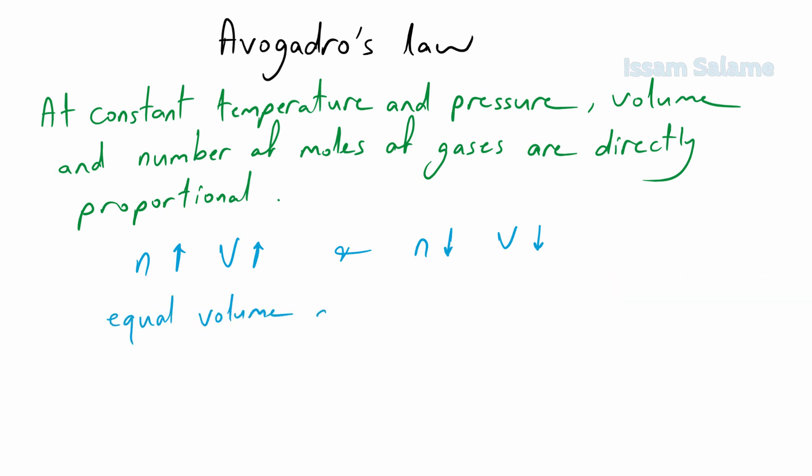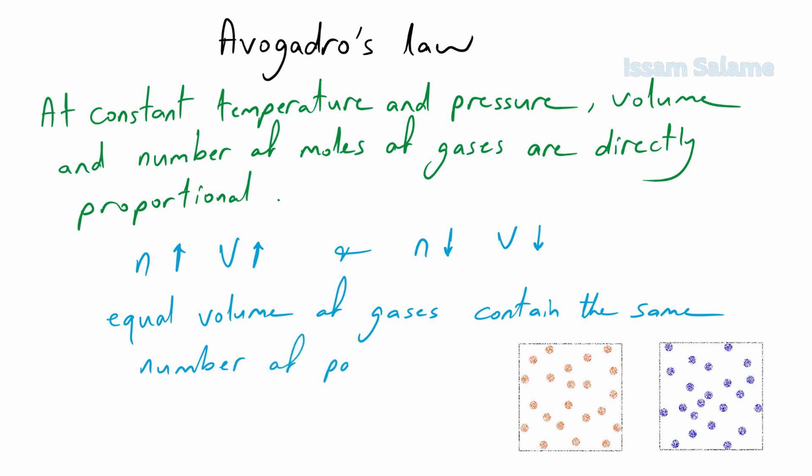Avogadro's law also states that equal volumes of gases contain the same number of particles. If you have two different gases with the same volume at constant temperature and pressure, they're going to have the same number of particles. So the ratio of the volume by the number of moles is always constant.